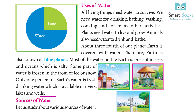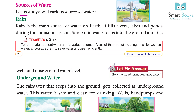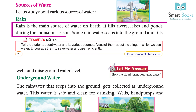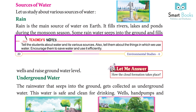Sources of water: Rain is the main source of water on Earth. It fills rivers, lakes, and ponds. During the monsoon season, some rainwater seeps into the ground and fills wells, raising the groundwater level.